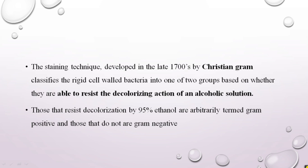Those that resist the decolorization by alcohol — that is 95% ethanol — are arbitrarily termed gram positive, and those that do not resist the decolorization with alcohol are classified as gram negative bacteria.